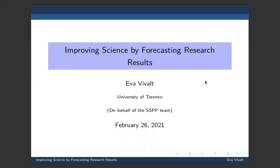Hi everyone, welcome back. Very happy to be joined by our third keynote speaker, Eva Wiebald, who is at the Department of Economics right here at the University of Toronto. She's mostly interested in cash transfers and reducing barriers to evidence-based decision making and global priorities research. She took a PhD from Berkeley, went on to our bank and various other institutions, including the Australian National University. Very happy to welcome Eva today. I'm really excited to be presenting this work on improving science by forecasting research results.